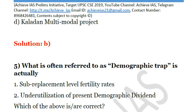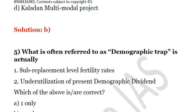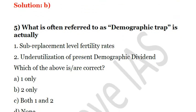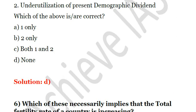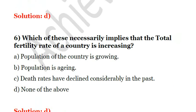The next question: what is often referred to as the 'demographic trap'? — First, sub-replacement level fertility rates. Second, under-utilization of present demographic dividend. None of these is correct. The demographic trap is actually a situation of high birth rate but low death rate. So the answer is D.